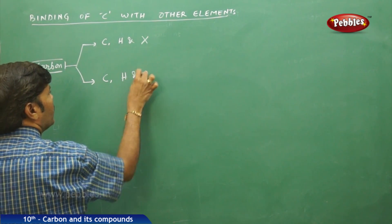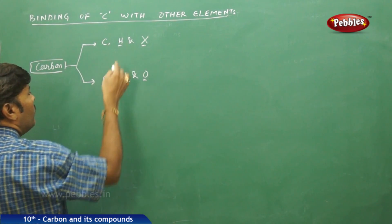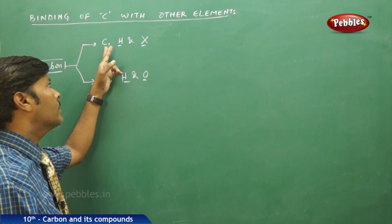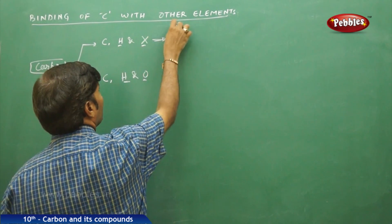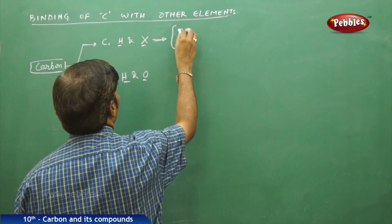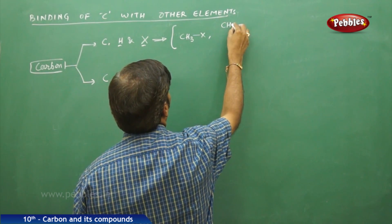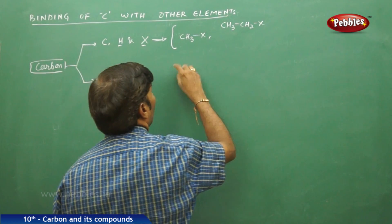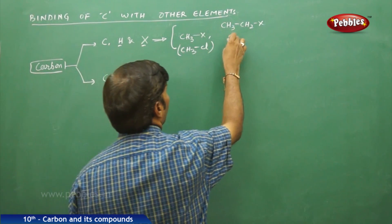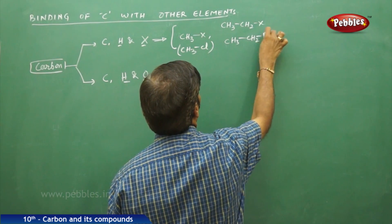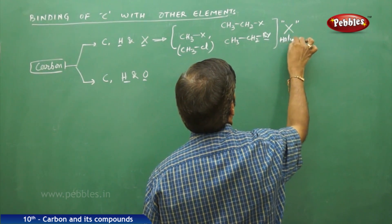Carbon can also bind with hydrogen and oxygen, forming different compounds made up of carbon, hydrogen, and halide. Taking different combinations, we can write CH3X or CH3CH2X. For example, CH3Cl — taking chloro group — or CH3CH2Br — taking bromine in place of halogen. So here X is a halogen.